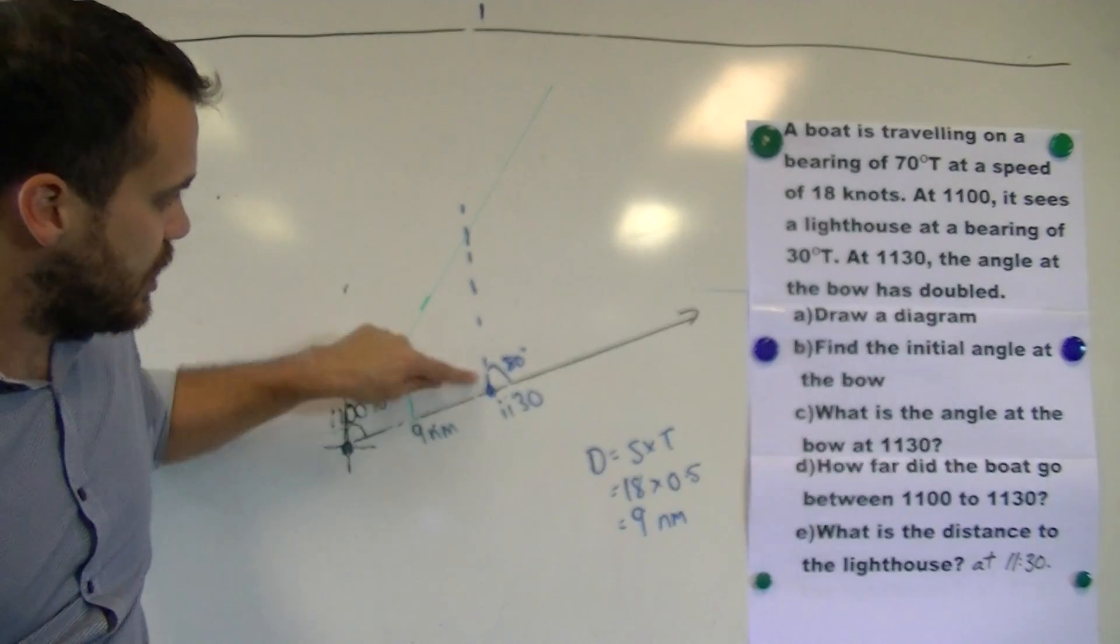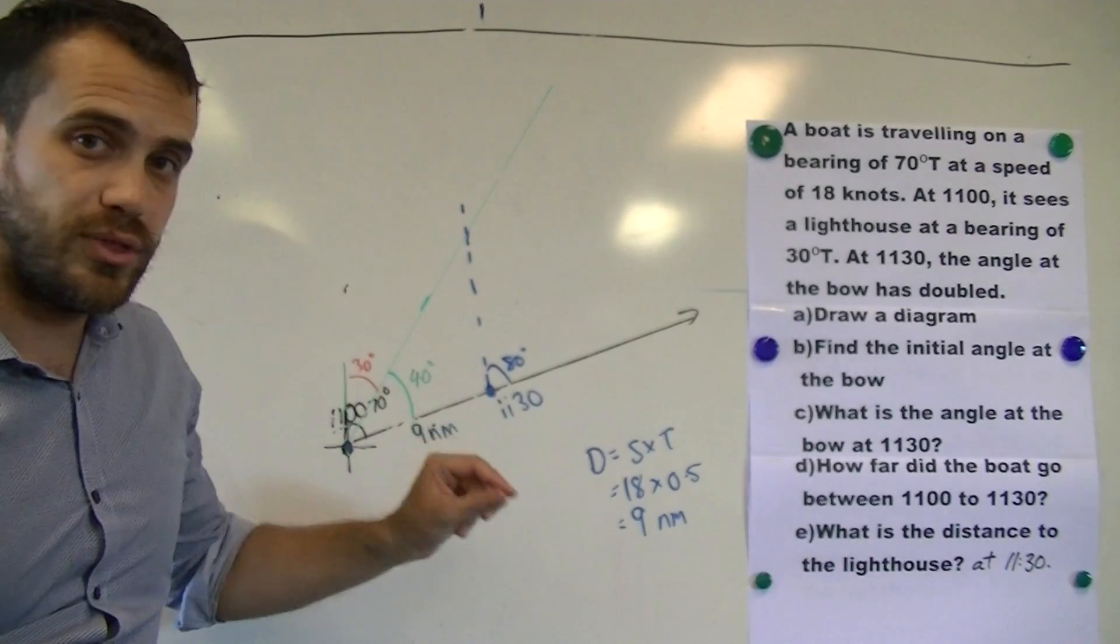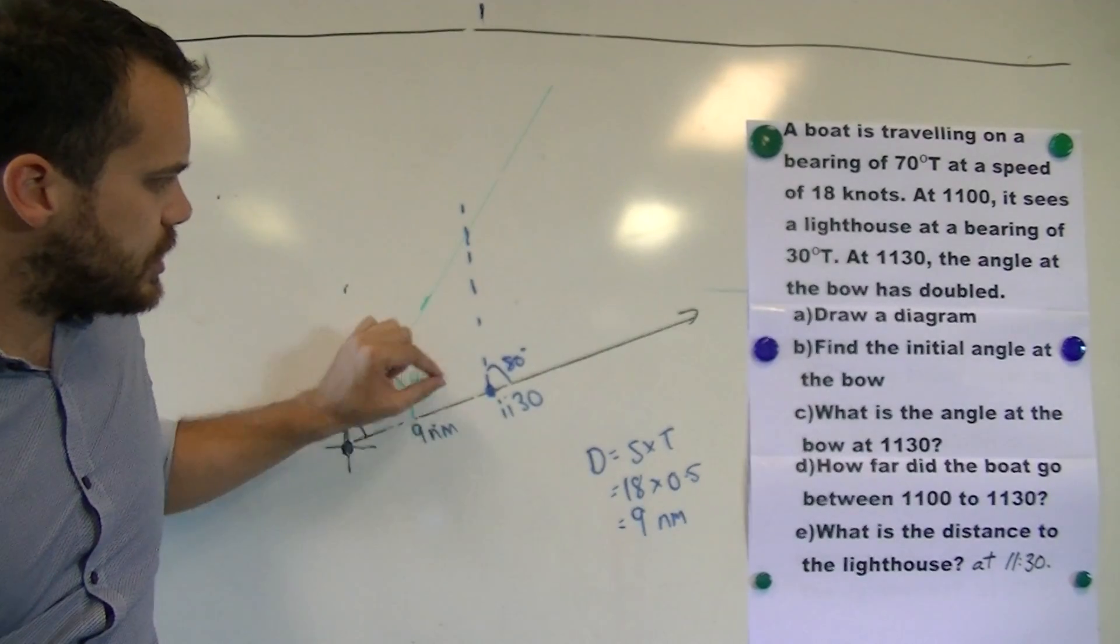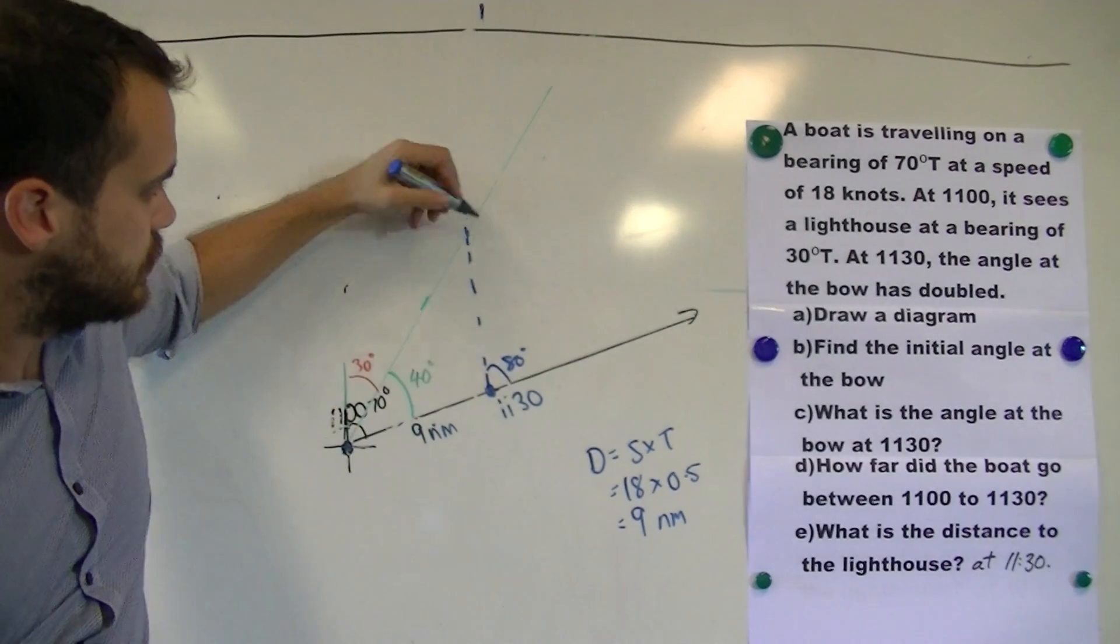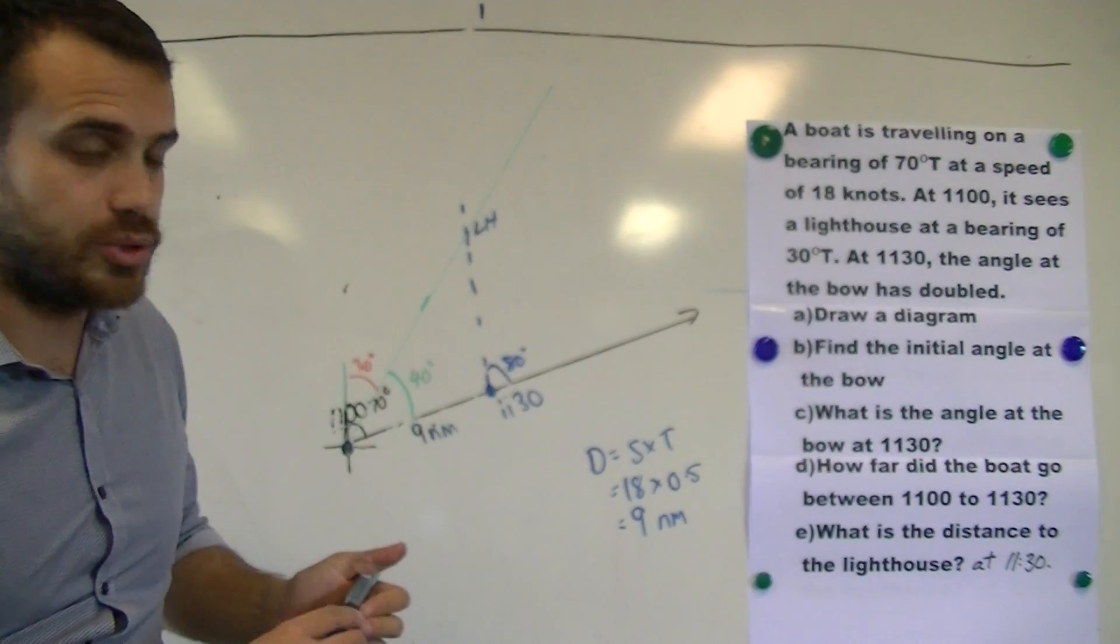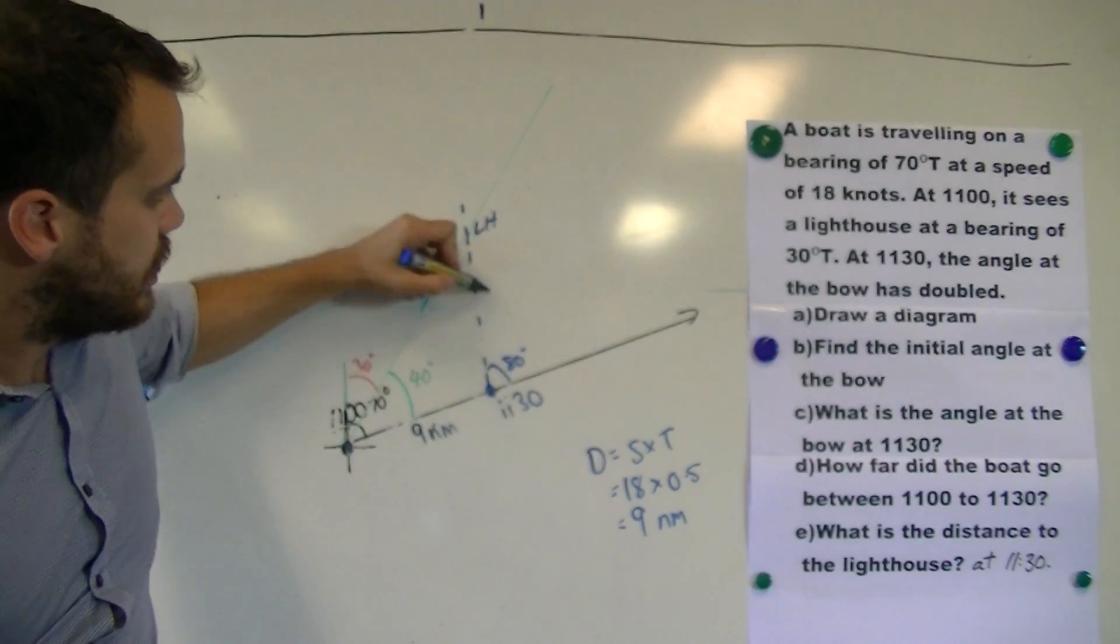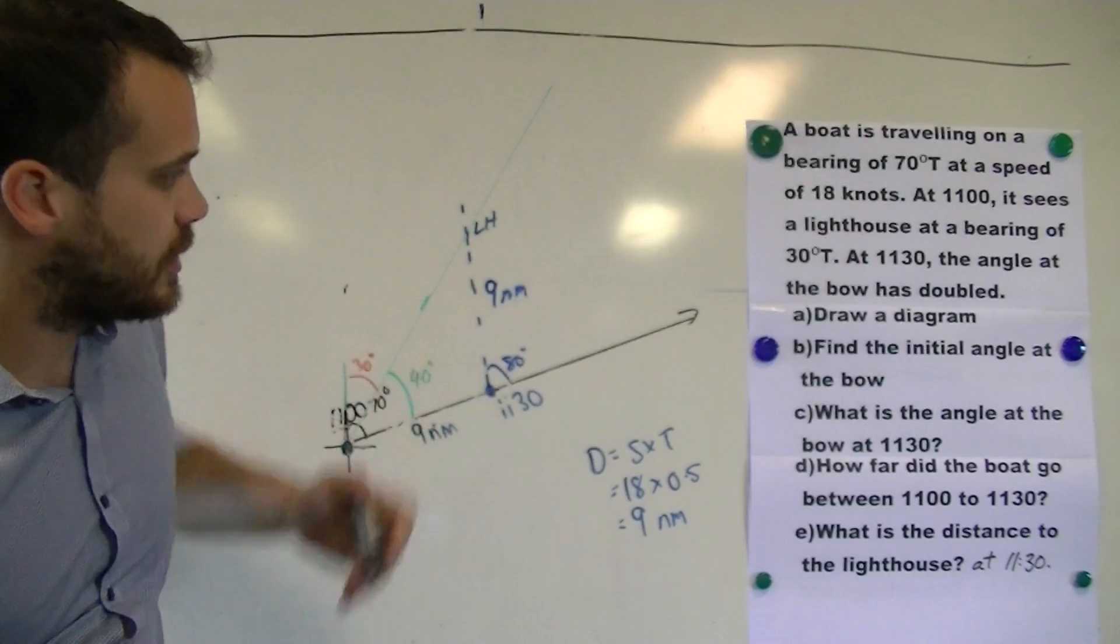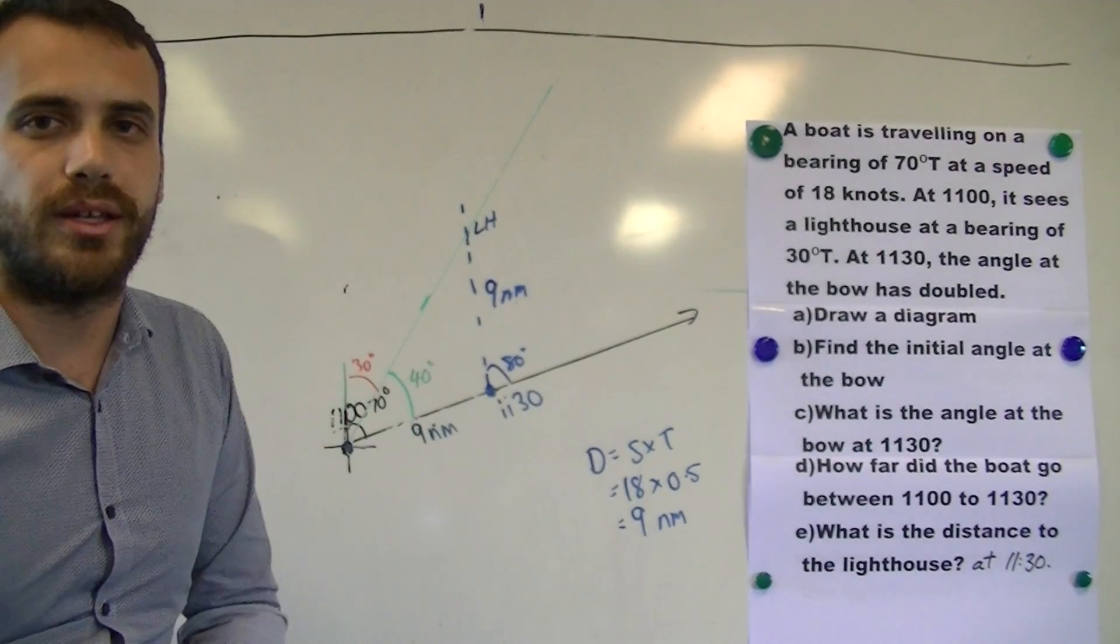A triangle where this length and this length are equal. So we know that at 11:30, the distance from the boat to the lighthouse, which is here, is equal to whatever the distance is that we travelled. 9 nautical miles. So the answer here, 9 nautical miles. This is doubling at the bow.